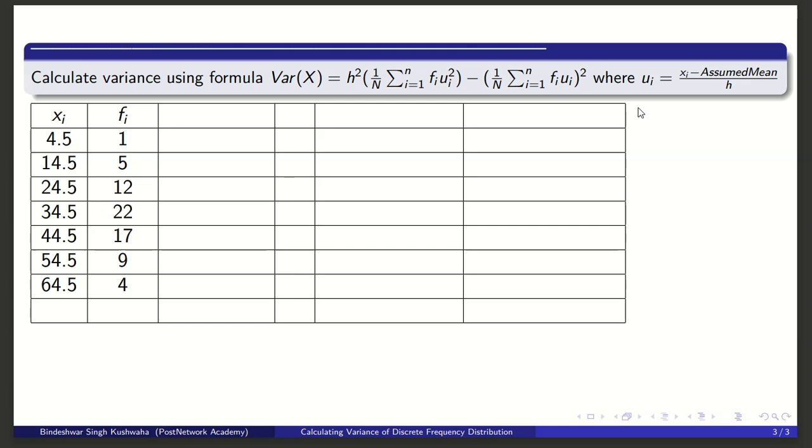So what is h²? Basically, instead of di or xi, the new variable here is ui. And what is ui? You will subtract the assumed mean and divide by h, so the value of x would be scaled down, computation would be easy, and there will not be any effect on the result.